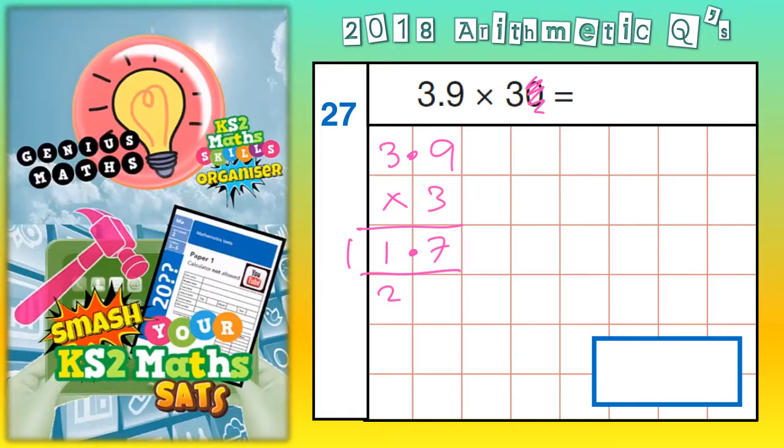But if we make that 3 ten times bigger, 30, which is what the question actually wanted, if we made the 3 ten times bigger, we'd have to make our answer ten times bigger. And to make your answer ten times bigger than 11.7, all the digits move one place to the left.